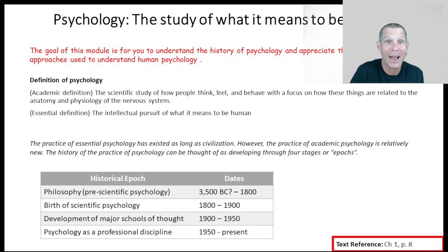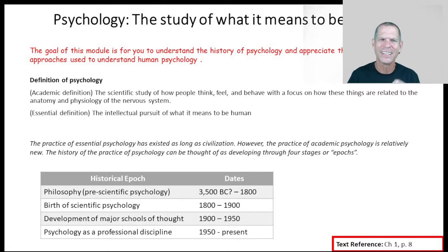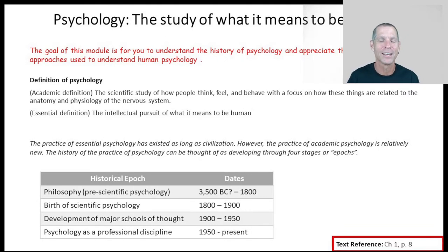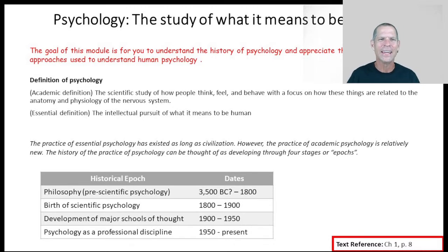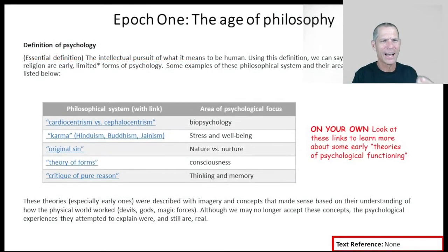Why do I feel this way? Why do I think this way? Why do I behave this way? Why am I crying? Why am I happy? What makes people prideful? What makes people ashamed? For the entire history of humankind, all we've done is think about these things. So the first brand of psychology, as old as society itself, is the study of human being — this idea of the age of philosophy.